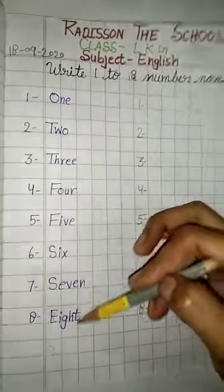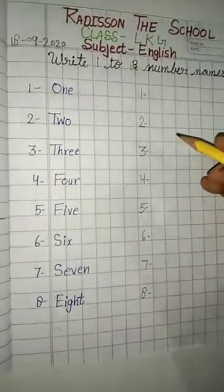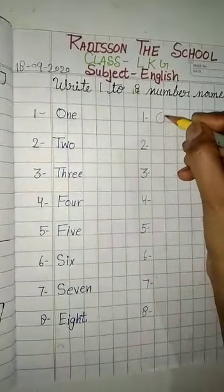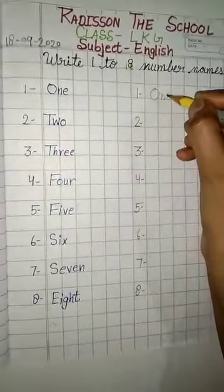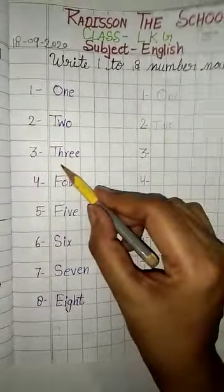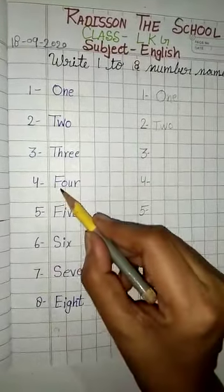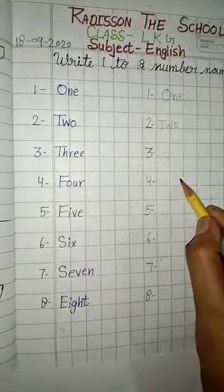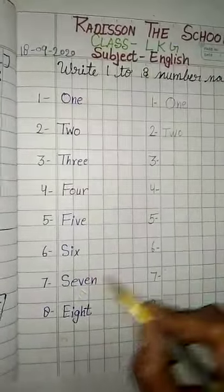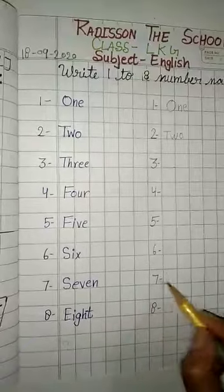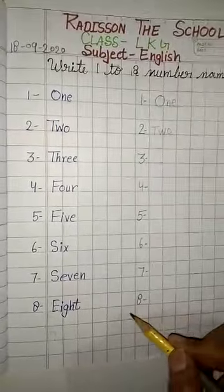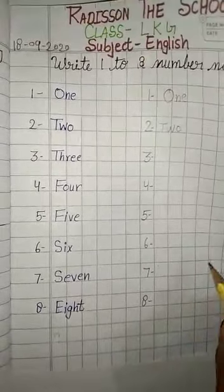One time I have done it here and the second time you will do it. 1-O, what is the spelling of 1? O-N-E-1, T-W-O-2, T-H-R-E-E-3, F-O-U-R-4, F-I-V-E-5, S-I-X-6, S-E-V-E-N-7, E-I-G-H-T-8. Okay students and you have to learn number names.